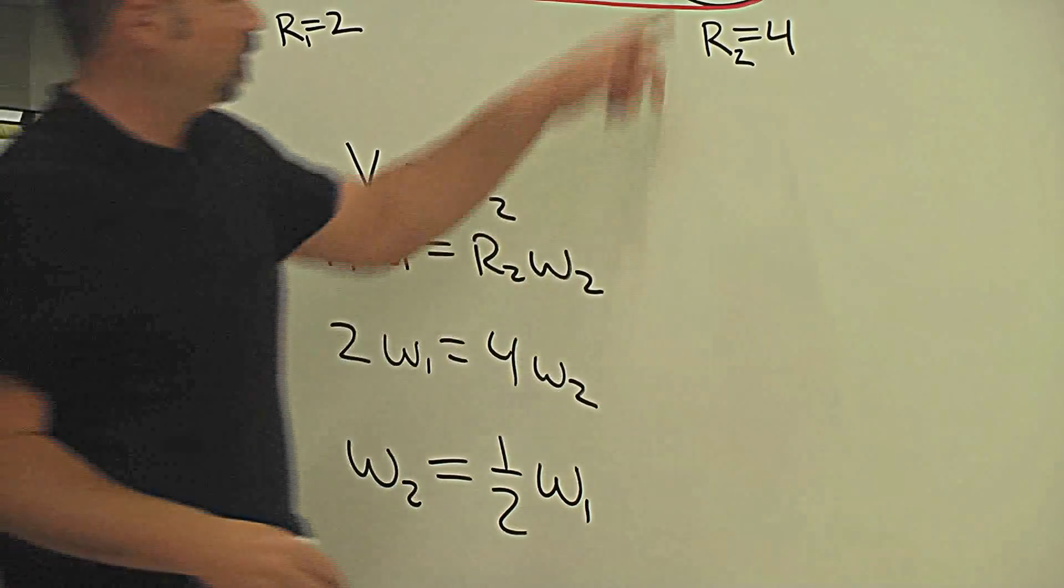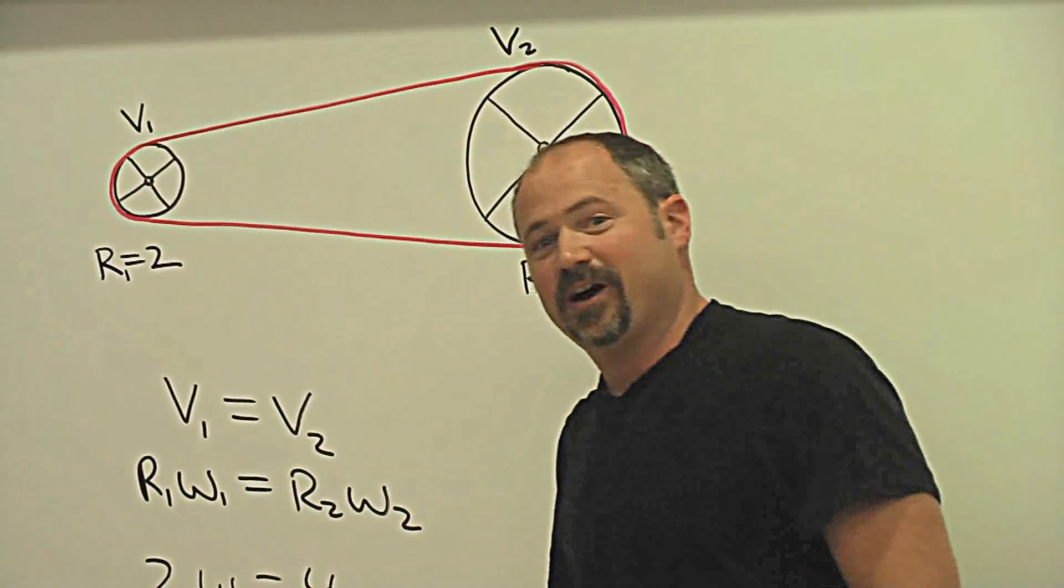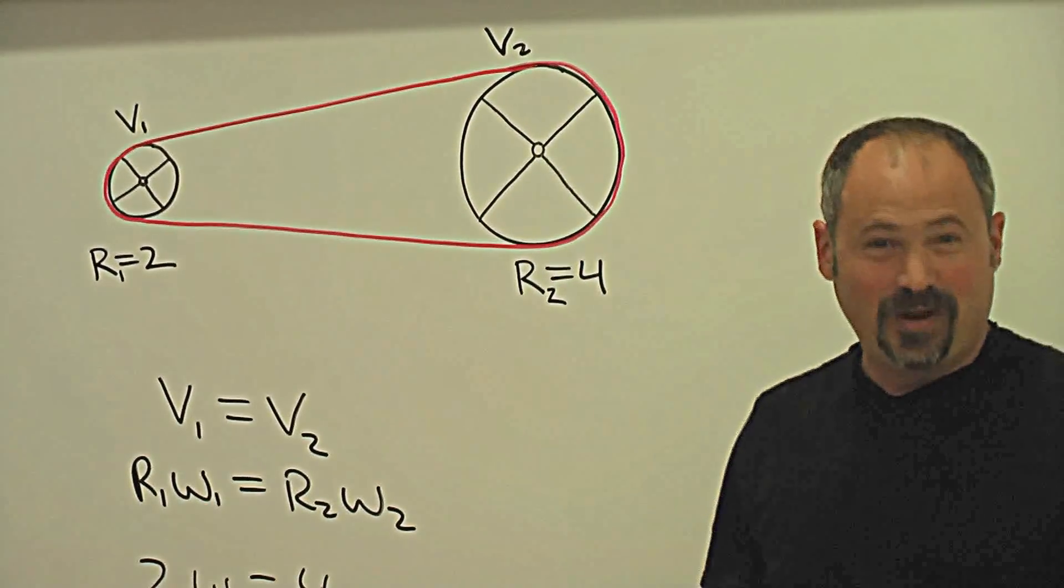So, for example, if you're pedaling here, for each turn you do, you get two turns there. Good way to go faster.